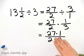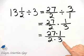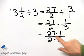Before I actually multiply these numbers out, I notice there are common factors. There's a common factor of three in this three and this twenty-seven.